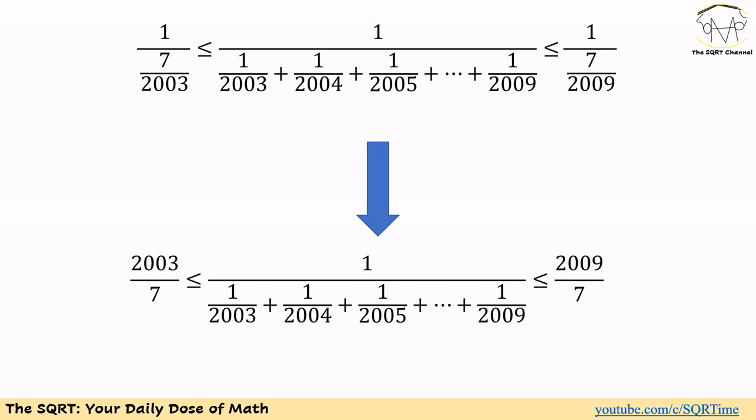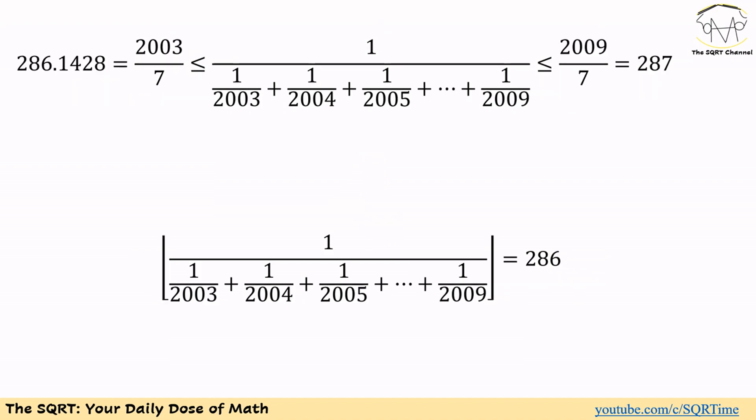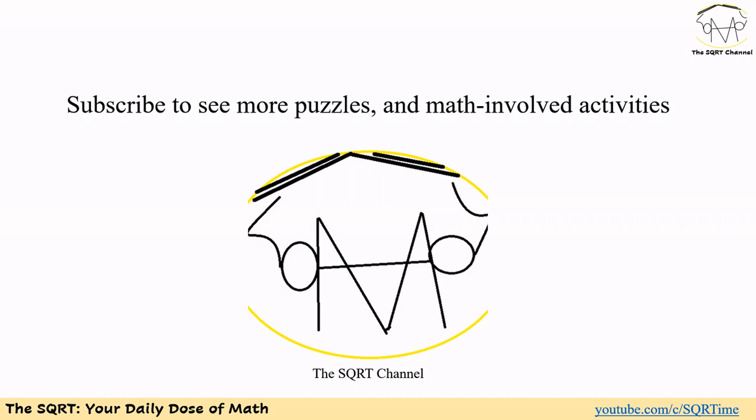If we simplify, we get 2003 over 7 for the lower bound and 2009 over 7 for the upper bound. Now if we calculate 2003 over 7 and 2009 over 7, we will see that the integer part of the initial expression is going to be 286, and that's our final answer. Thanks for watching. If you would like to see more puzzles and math olympiad activities, please subscribe to the SQRT channel.